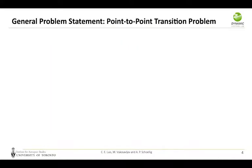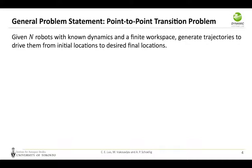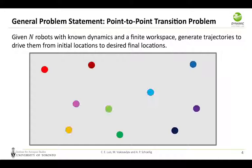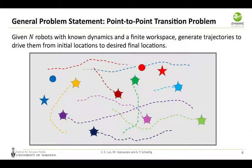Our general problem statement is called the point-to-point transition problem which goes as follows: Given N robots with known dynamics and a finite workspace, we need to generate trajectories to drive them from initial locations to desired final locations. The problem may be solved either offline or online. In this paper we focus on online methods since they have added robustness during execution.